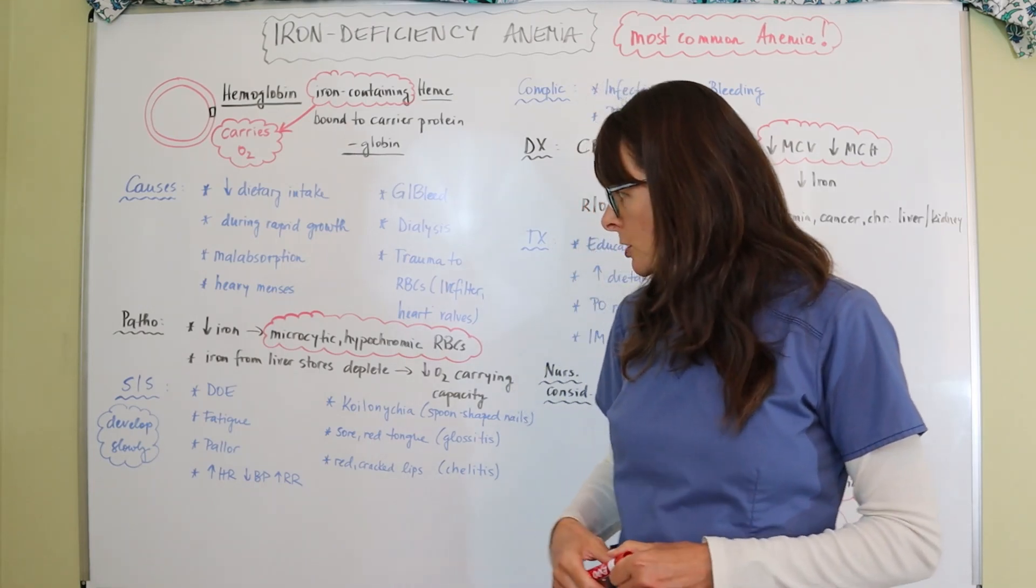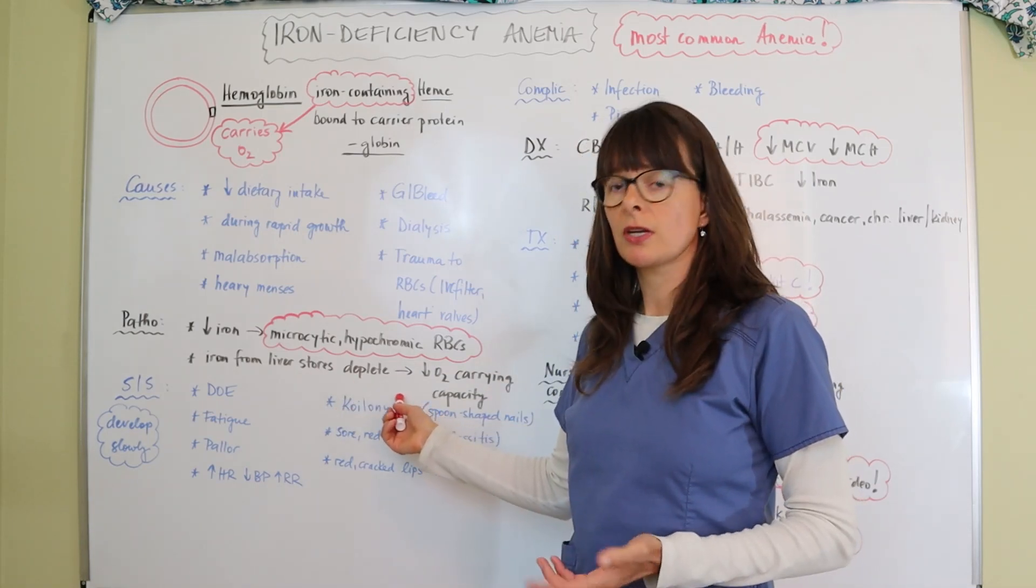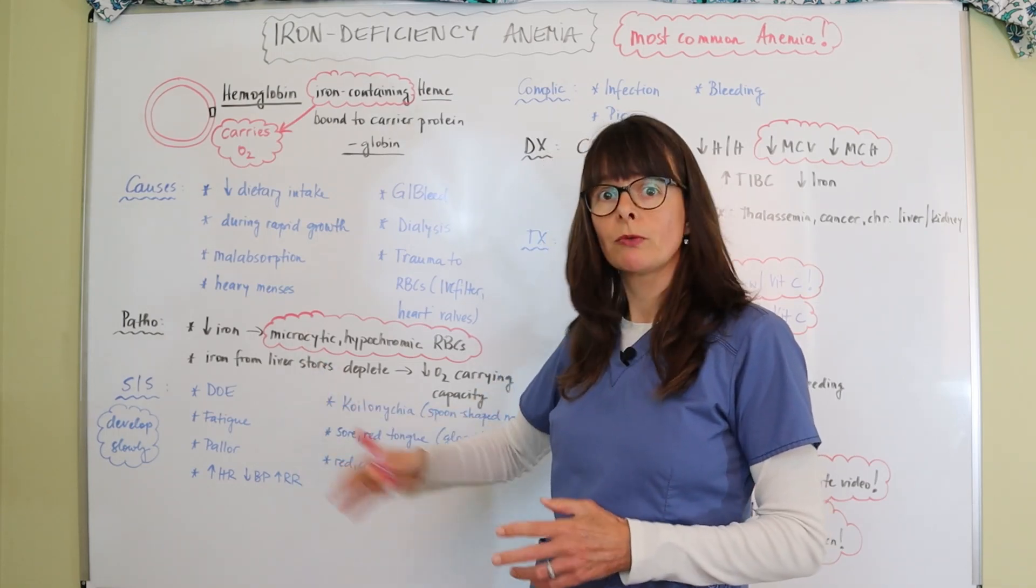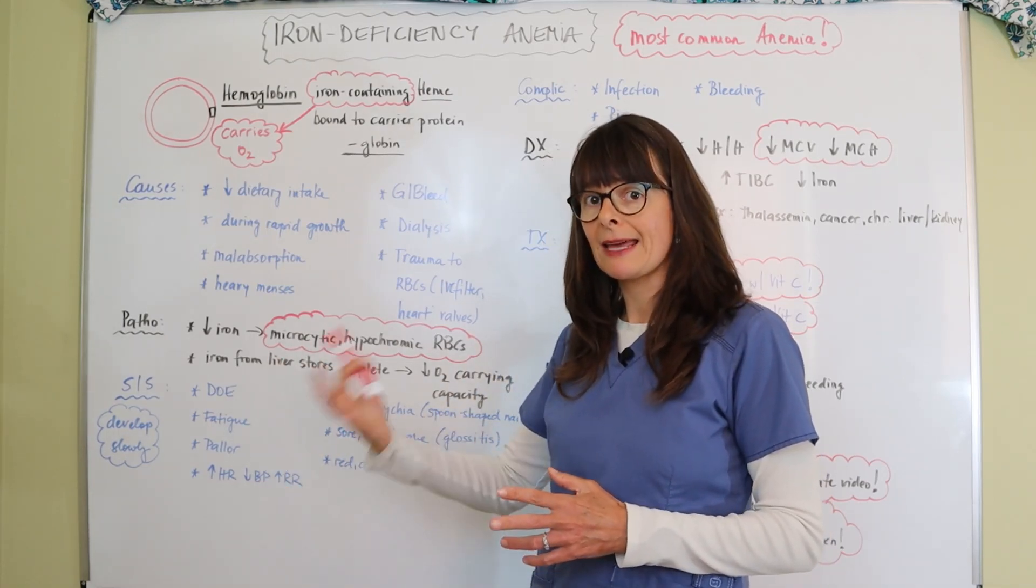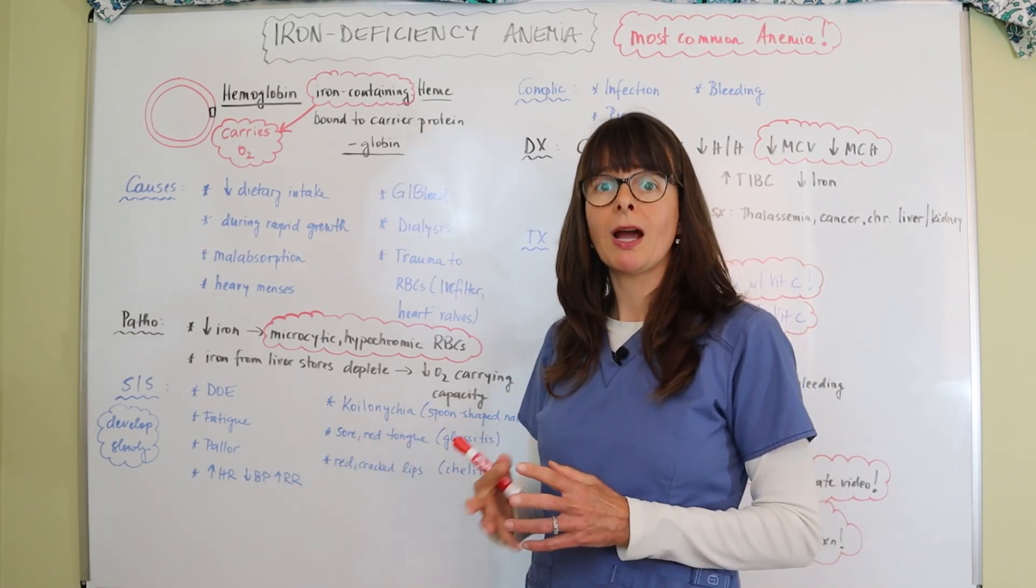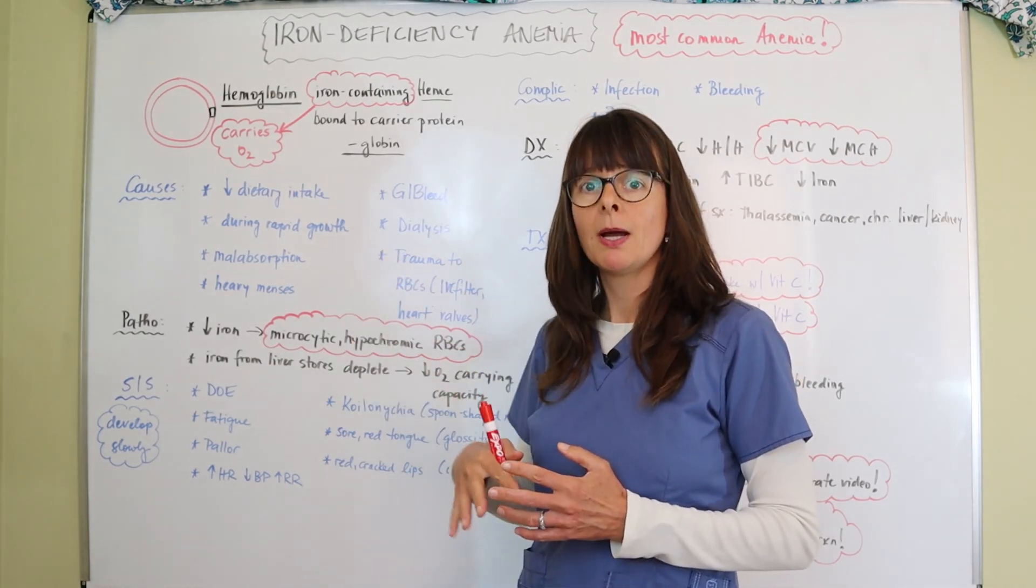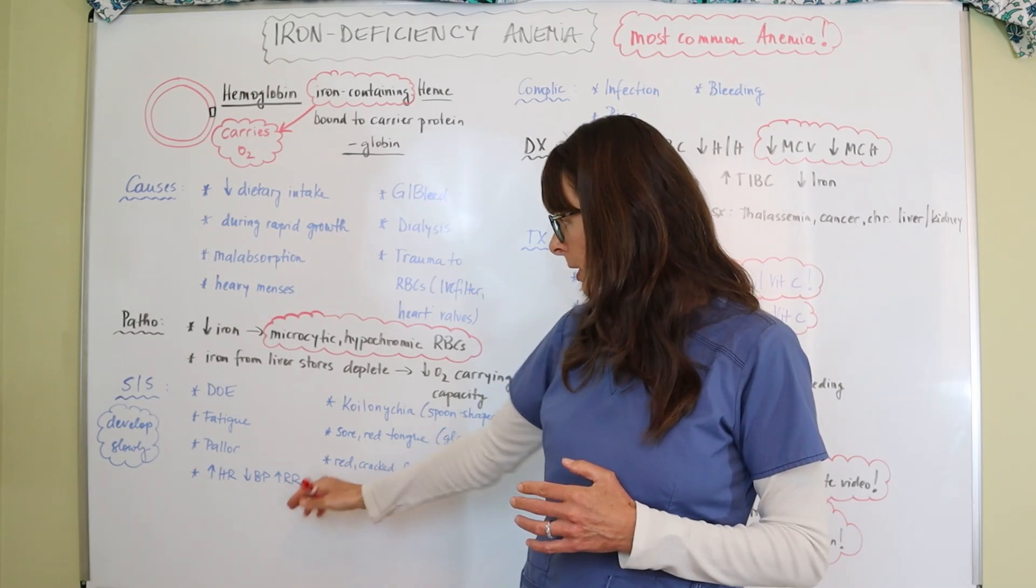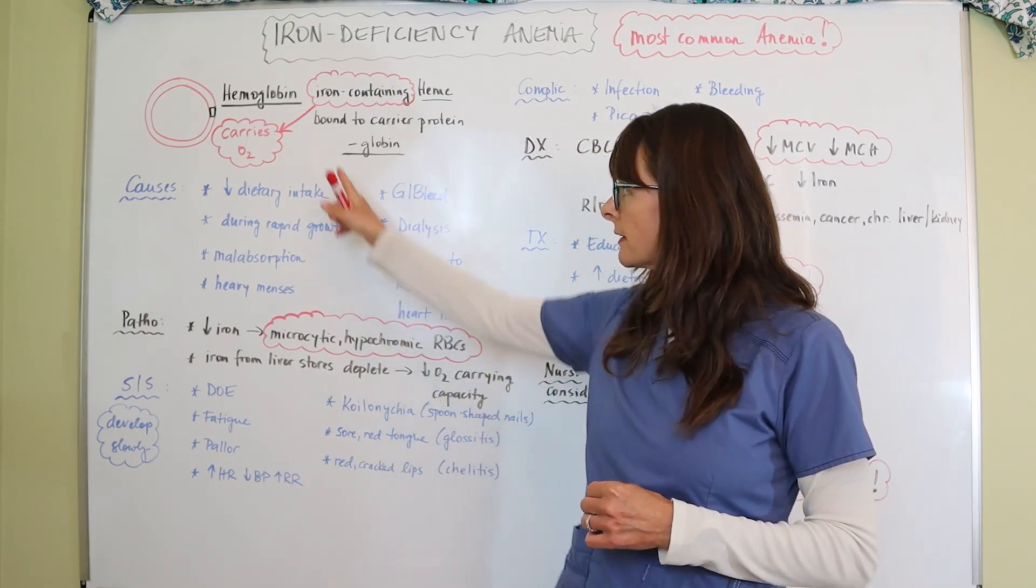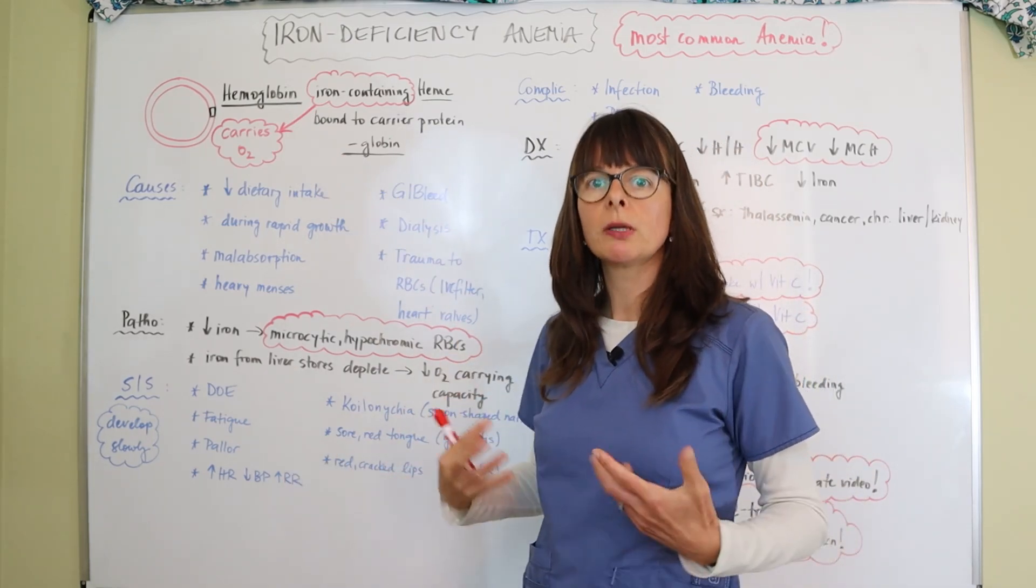The patient might have dyspnea on exertion because they just don't have the oxygen carrying capacity, they might feel fatigued, they might also be pale because we're losing red blood cells and the iron that gives the color. In response as we're losing blood we're becoming hypovolemic so in response the heart rate will go up, blood pressure will go down, and also in response to decreasing these oxygen molecules that the iron is carrying the patient's respiratory rate will go up.